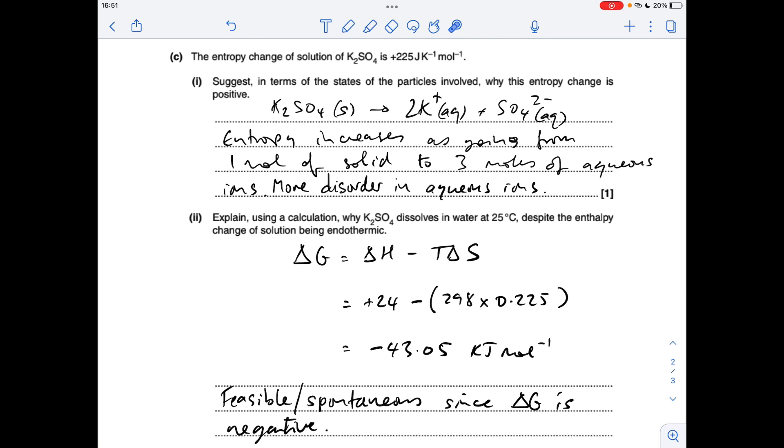Finally, why does potassium sulfate dissolve in water at 25 degrees C despite it being endothermic? It's all down to the fact that delta G comes out being negative. You can see I'm getting delta G at minus 43.05 kilojoules per mole. If you've worked in joules per mole, you'll have got a thousand times more than that, but you would still have got a negative sign there. So it's feasible or spontaneous since delta G is negative.